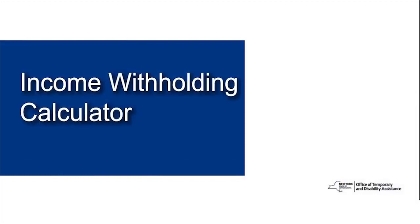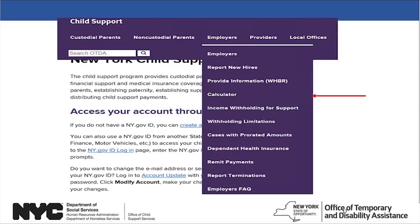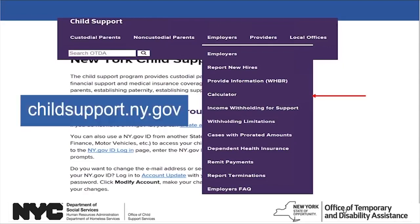The Income Withholding Calculator and Lump Sum Calculator are two tools available online that employers can use to calculate child support withholding following federal and state rules. You can access either calculator by navigating to the New York State Child Support website, childsupport.ny.gov.